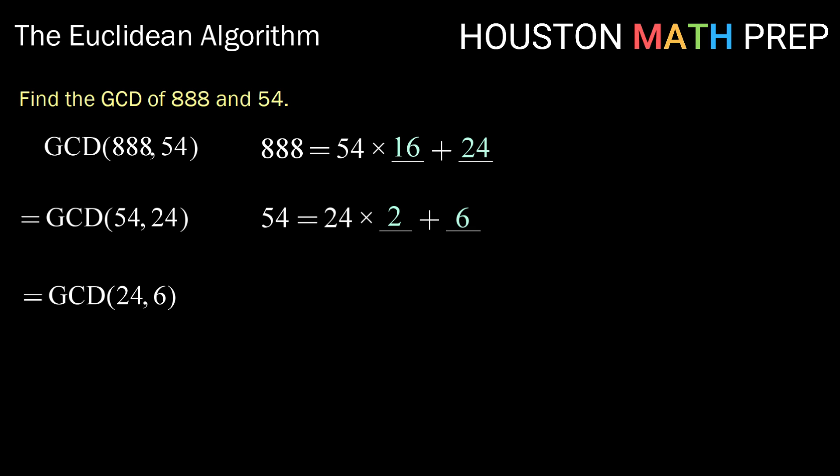Now again, you could stop here, do the prime factorization, and go from there. However, we could also try going one more time. 24 would be equal to 6 times 4, but 6 times 4 is 24, so here we get a remainder of 0. That tells us that we have reached the two smallest numbers that we can use. So at this point, we have to find our GCD using one of our other methods. In either way, we would get that our GCD for 24 and 6 is 6, and by the Euclidean algorithm, that means that the GCD of 888 and 54 is equal to 6.